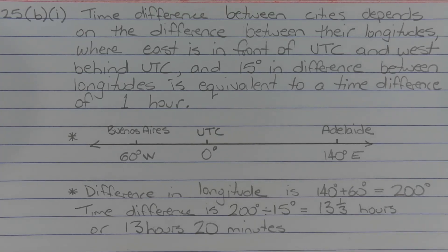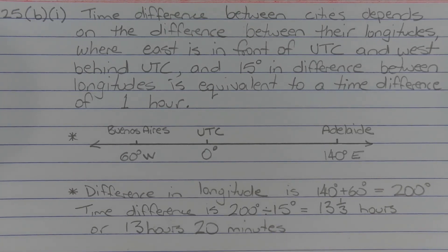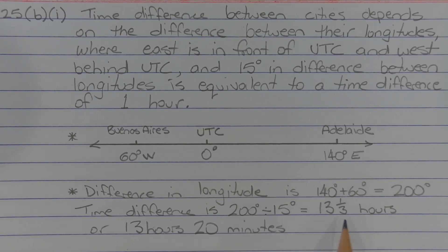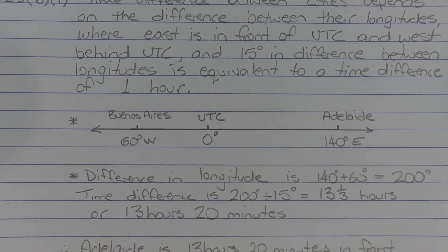That equals 200 degrees. So the time difference is 200 degrees divided by 15 degrees, since every 15 degrees equals one hour, and that equals 13 and one-third hours, or 13 hours and 20 minutes.